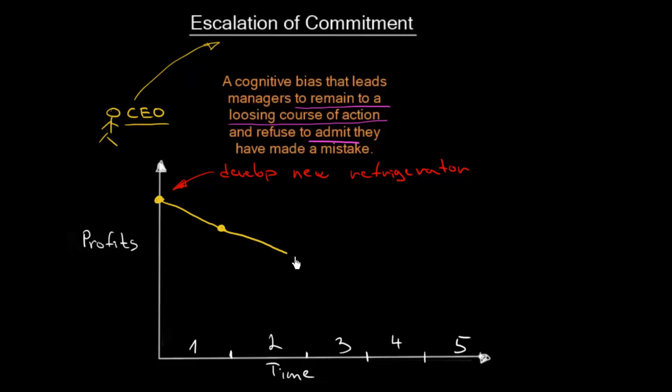We continue and our profits are still going down and down. If we were a smart CEO that wouldn't suffer from escalation of commitment, we would see that there is some problem with our new refrigerator. Maybe we should stop manufacturing it. If we would do so, maybe we would return to increasing profits again.